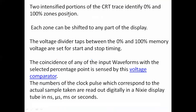Here we will see two intensified portions of the CRT display, identified as 0% and 100% zone positions. Each zone can be shifted to any part of the display. A voltage divider is used, with taps between 0% and 100% of the memory. These two voltages are used for the starting and stopping of the timer, and a clock gate is used for that start and stop, produced by the 0% and 100% memory voltage.